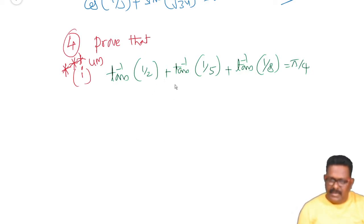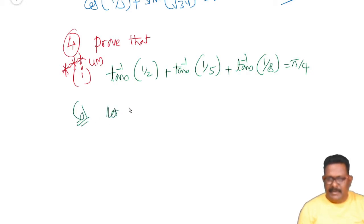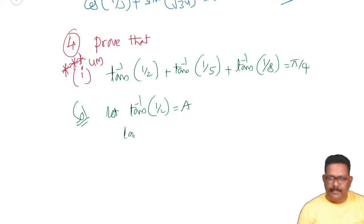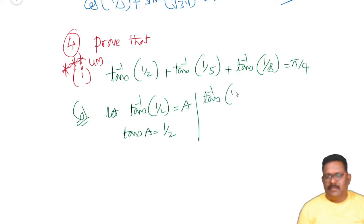We will use the addition law. Let tan inverse 1 by 2 be equal to a, so tan a equals 1 by 2. Let tan inverse 1 by 5 be equal to b, so tan b equals 1 by 5.